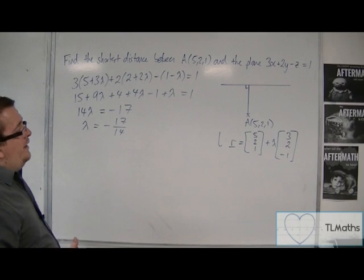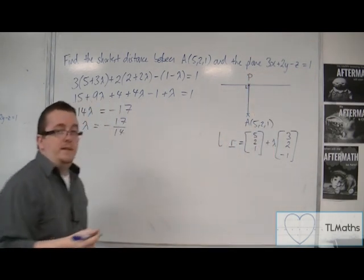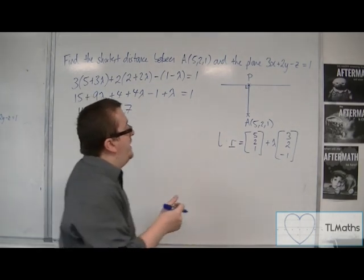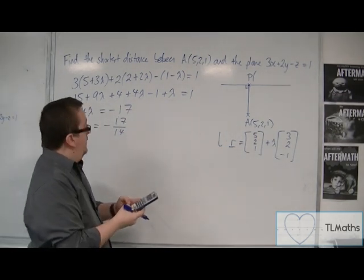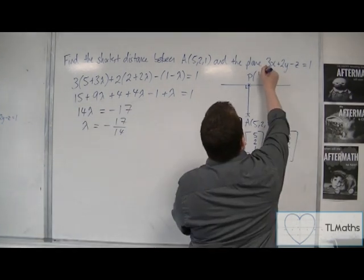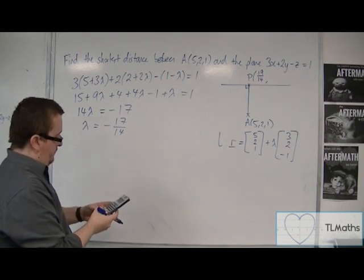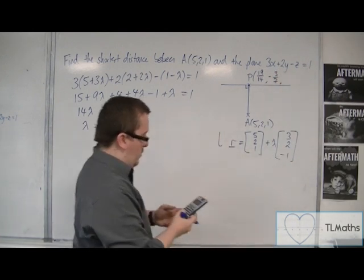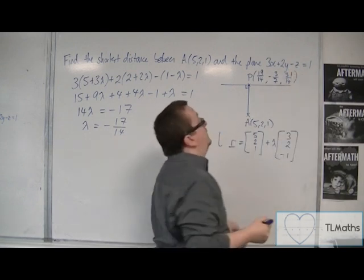So that's λ, which allows me to find the point P on the plane by substituting λ back into the equation of the line. We get: x = 5 + 3(−17/14) = 19/14, y = 2 + 2(−17/14) = −3/7, and z = 1 − (−17/14) = 31/14. That gives me the coordinates of the point P on the plane.